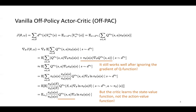OffPAC optimizes the objective function shown in the first line. We can further derive the formula into the following steps. In the third step, we just ignore the gradient of the Q function. This still works — it simplifies the computation of the gradient and can be proven to converge. In the last step, we finally obtain the action value function, and we use the critic to evaluate it.